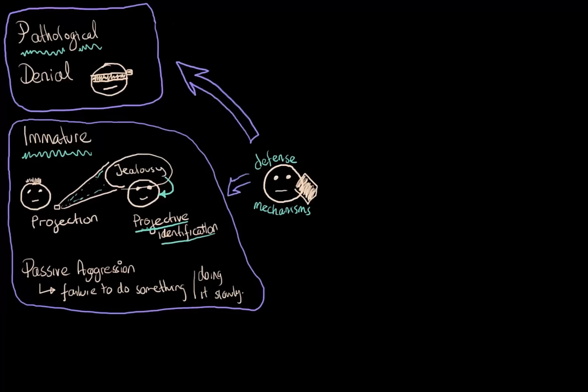Now, let's move on to a set of defense mechanisms that are called neurotic. Let's start with intellectualization. What happens in intellectualization is that somebody picks out the intellectual aspects of any situation and detaches it from the emotional aspects, taking away that anxiety-invoking emotional part of the situation. So this is really a separation of emotion from ideas.